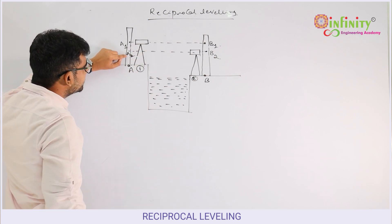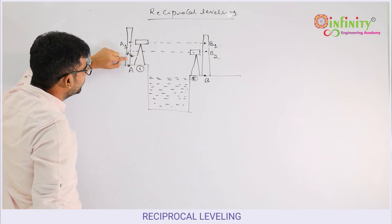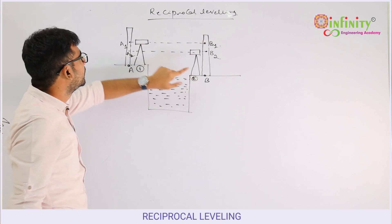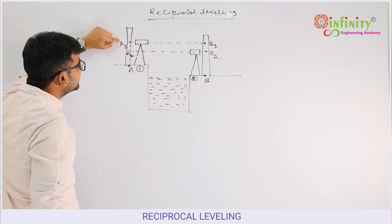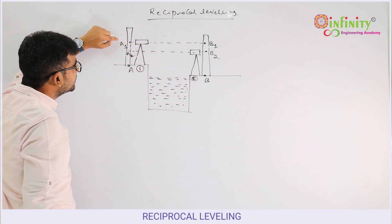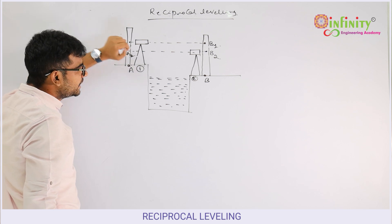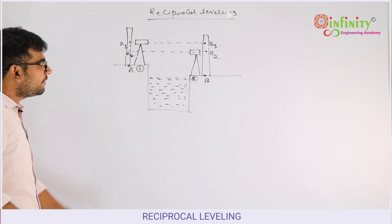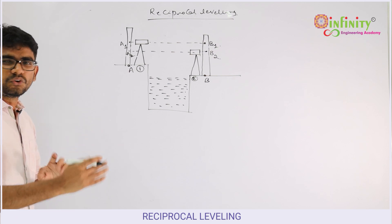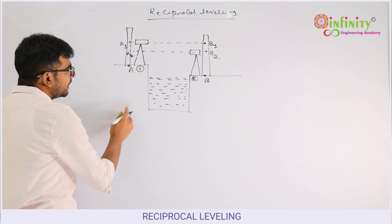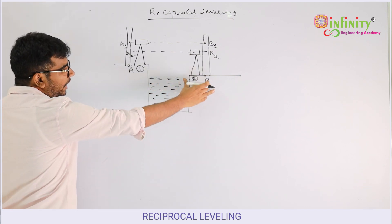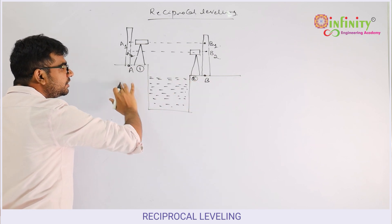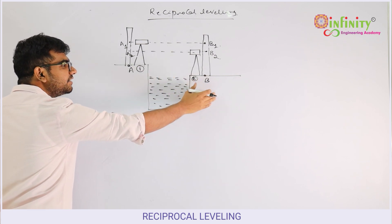So to clarify: A2 means the staff reading taken on station A from instrument position 2, and A1 means the staff reading taken on station A from instrument position 1. You have to take these four readings — A1, B1, B2, and A2. After taking these four readings, you can determine the RL of the unknown point if the RL of one point is known.